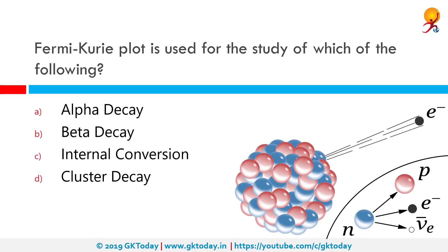The Fermi-Kurie plot is used for the study of which of the following? It's used for beta decay. Beta decay is one process that unstable atoms can use to become more stable. There are two types of beta decay: beta minus and beta plus. During beta minus decay, a neutron in an atom's nucleus turns into a proton, an electron, and an anti-neutrino.